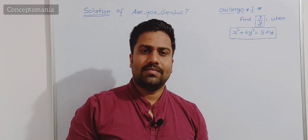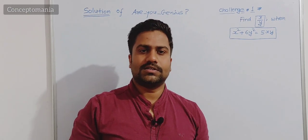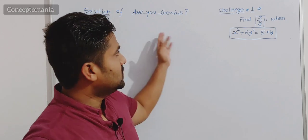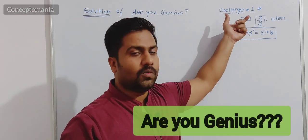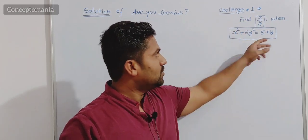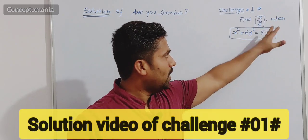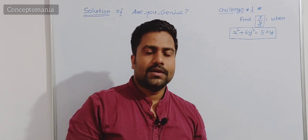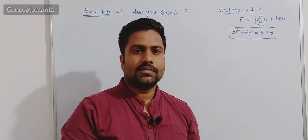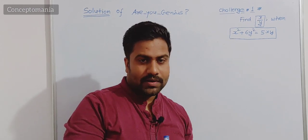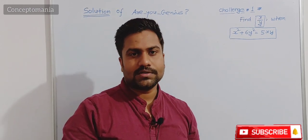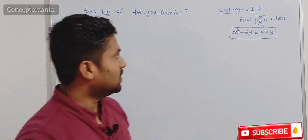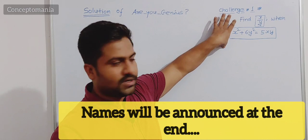Hello students, welcome back to the channel. In this small journey 'Are You Genius', you were given Challenge Number One. The question is: find x upon y when x square plus 6y square is equal to 5xy. If you want to continue in this journey, don't forget to subscribe, like and share. Let us see the solution of Challenge Number One.